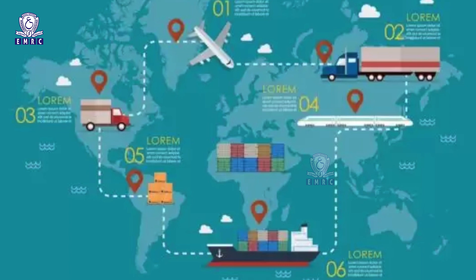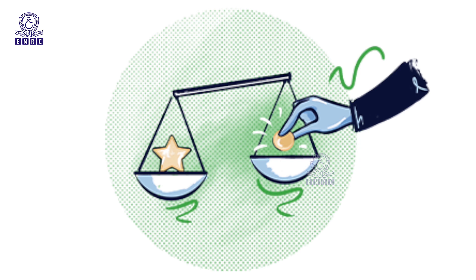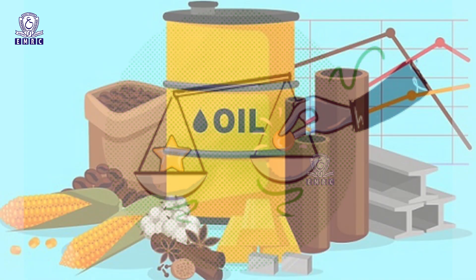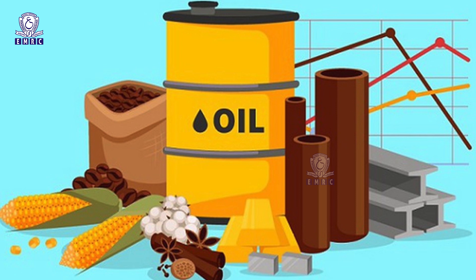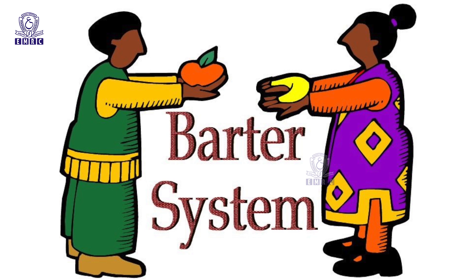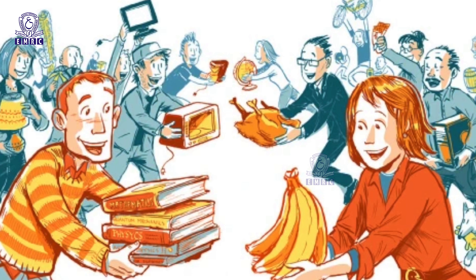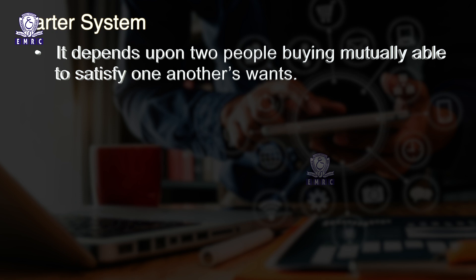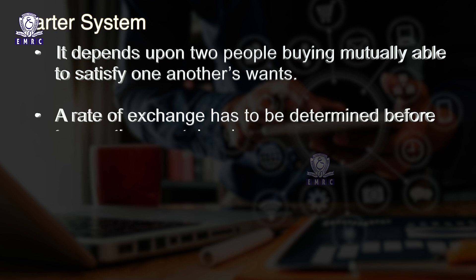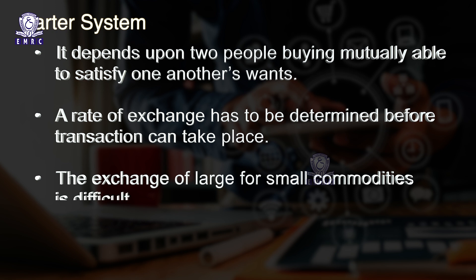People trade to obtain commodities they cannot produce themselves or things they can purchase elsewhere at lower cost. Trade is simply the exchange of goods and commodities at any level. The earliest form of trade was barter, in which goods were exchanged for goods. The barter system is still carried on in some primitive societies. The barter system of trade has three characteristics: it depends on two people mutually able to satisfy one another's wants; a rate of exchange has to be determined before a transaction; and the exchange of large for small commodities is difficult. Thus, present-day trade is mostly done through the medium of currency.